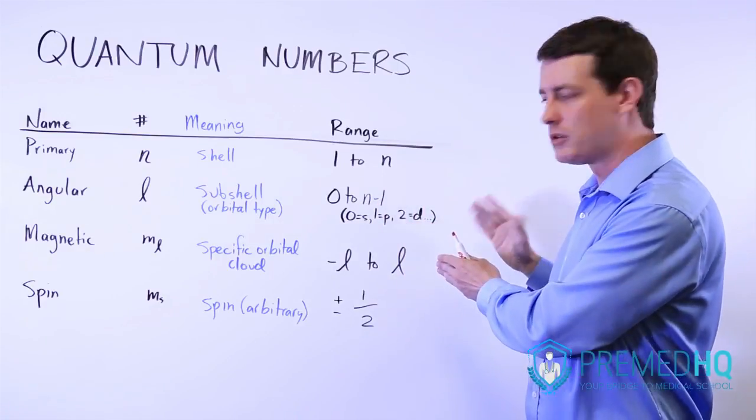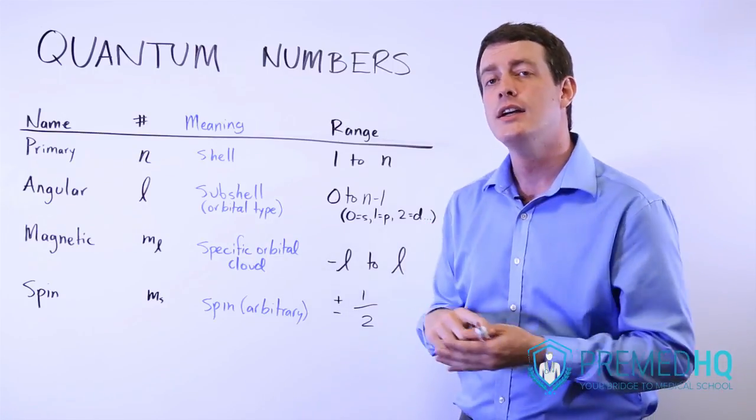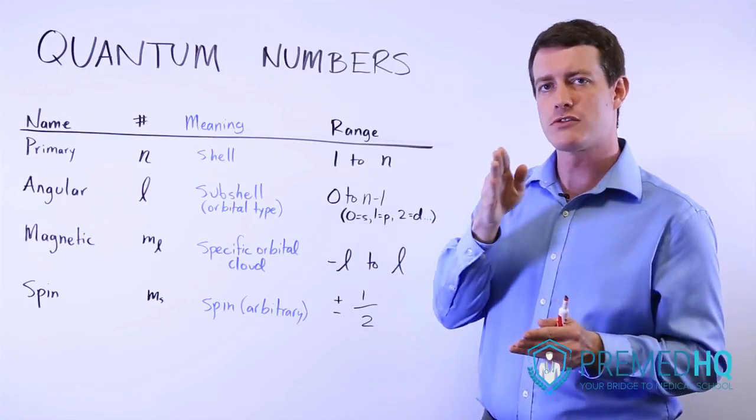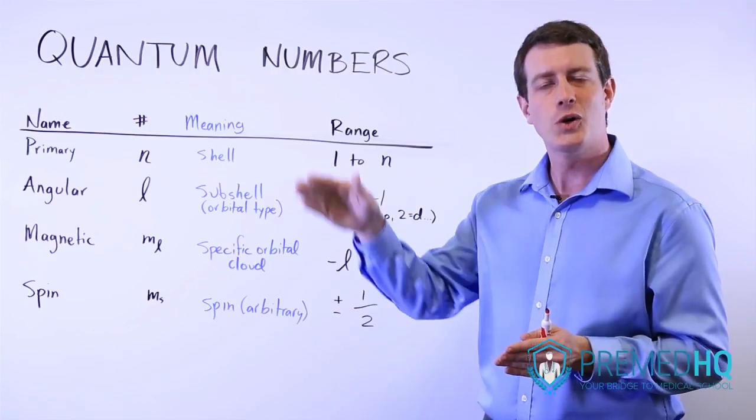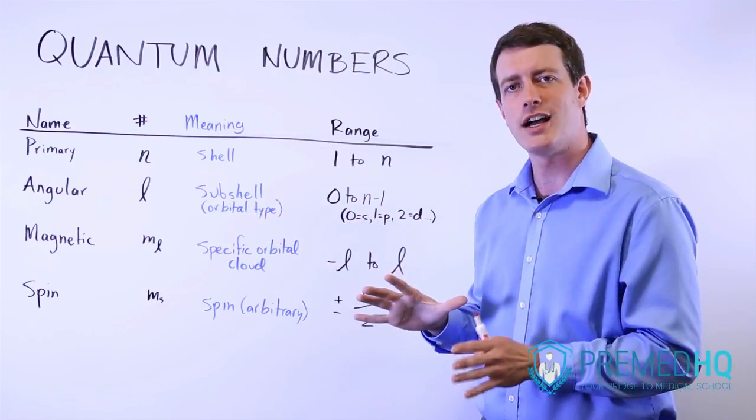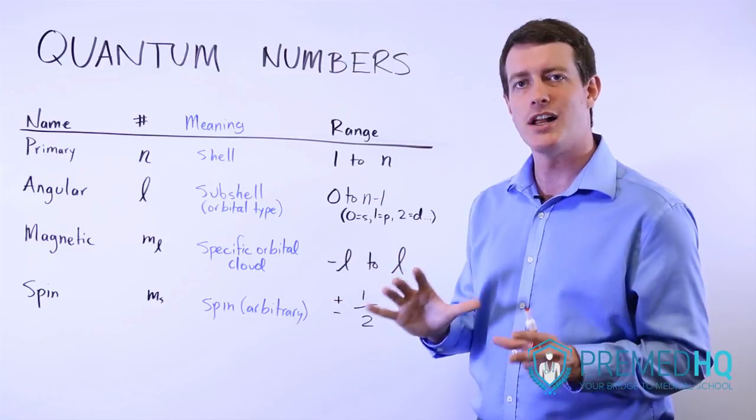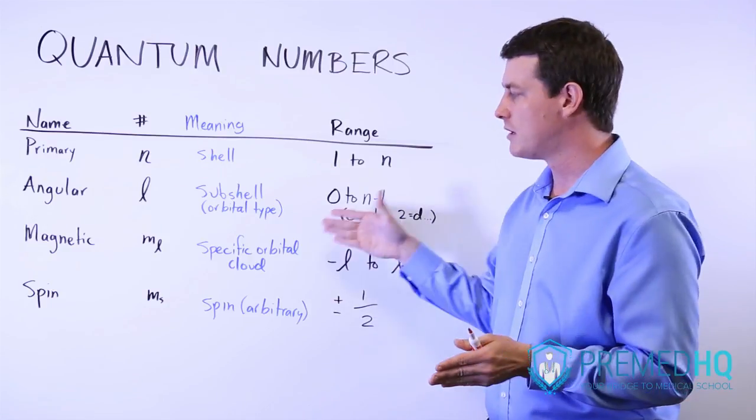And as you move to the f orbital, which is represented by 3, the f orbital has values from negative 3 to 0 to positive 3, which equals 7 different clouds. And that's the exact number of clouds that there are within the f subshell as well.